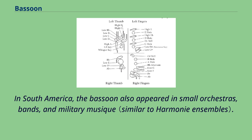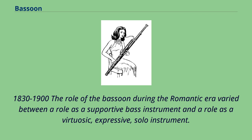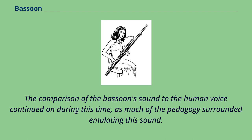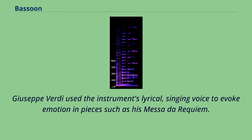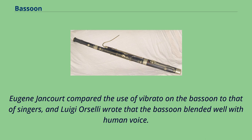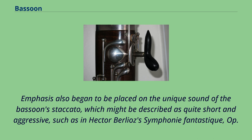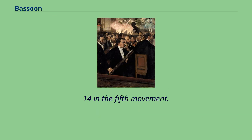From 1830 to 1900, the role of the bassoon during the Romantic era varied between a role as a supportive bass instrument and a role as a virtuosic, expressive solo instrument. Giuseppe Verdi used the instrument's lyrical, singing voice to evoke emotion in pieces such as his Messa da Requiem. Eugene Jancourt compared the use of vibrato on the bassoon to that of singers, and Luigi Orselli wrote that the bassoon blended well with human voice. Emphasis also began to be placed on the unique sound of the bassoon's staccato, such as in Hector Berlioz's Symphonie Fantastique, Op. 14, in the Fifth Movement. Paul Dukas utilized the staccato to depict the image of two brooms coming to life in The Sorcerer's Apprentice.